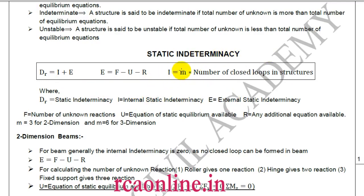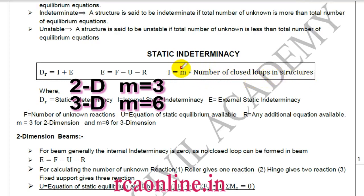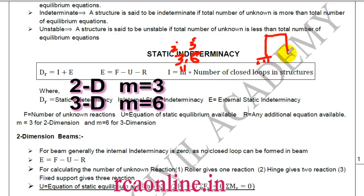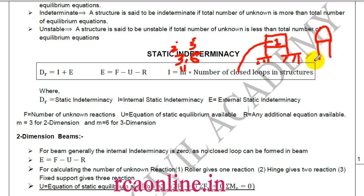Internal static indeterminacy equals m multiplied by the number of closed loops in the structure. For two dimensions, m is 3, and for three dimensions, m is 6. A closed loop means if a structure has a beam enclosing a region, that counts as one closed loop. Each additional enclosed region adds one more closed loop.